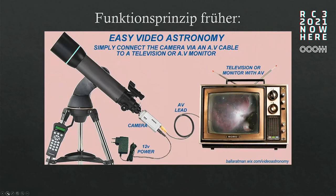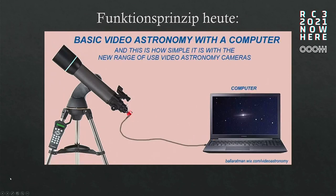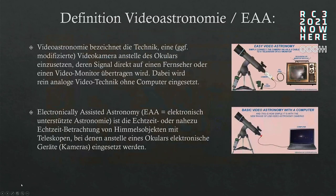So how does it work? For video astronomy, you have a telescope, and at the end you have a camera, and then a TV where it's transmitted to — and there you can watch it live. Today you do it a little bit differently: you again have the telescope, and then it goes directly to the computer, so you don't need any analog technologies.